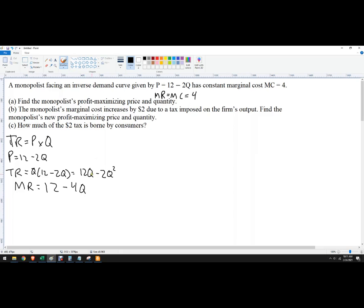So now I want to set marginal revenue equal to marginal cost. So that's going to be 12 - 4Q = 4. I'll do some rearranging and I'm going to get 8 = 4Q, and then Q is 2. So that's the profit maximizing quantity in this case.